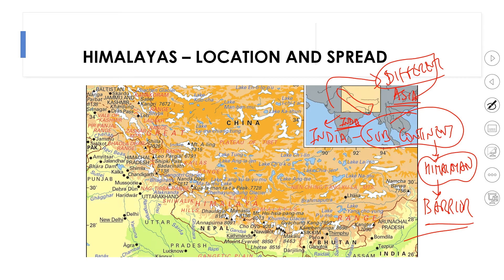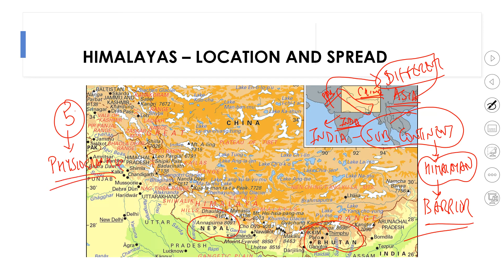The most important country in which the Himalayan mountain chain is present is India. To the north of the Himalayas is China. A portion of Himalayas also lies in Pakistan, and two smaller countries — Bhutan and Nepal — are sandwiched inside the Himalayan mountain chain. All in all, five countries have the physiographic presence of Himalayas. The Himalayas cover a substantial portion of western Indian states and northeastern states, and almost 80 percent of Nepal and Bhutan.